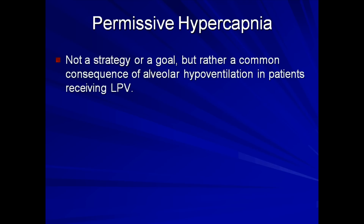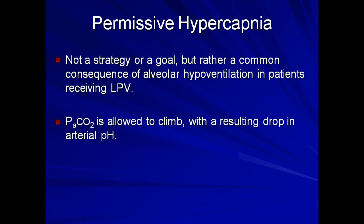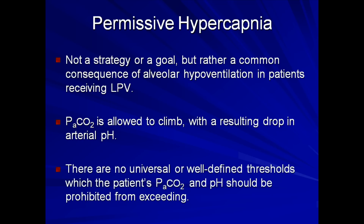One concept which is integral to lung protective ventilation is that of permissive hypercapnia. The first thing to realize about this is that permissive hypercapnia is itself not a strategy or goal per se, but rather a common consequence of alveolar ventilation in patients receiving lung protective ventilation. The arterial CO2 is allowed to climb through the resulting drop in arterial pH. There are no universal or well-defined thresholds which the patient's PCO2 and pH should be prohibited from exceeding.